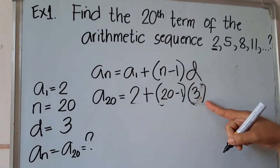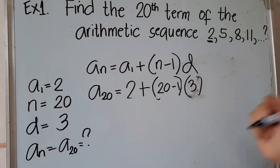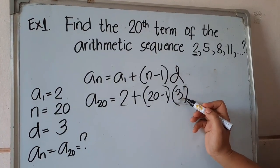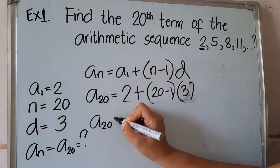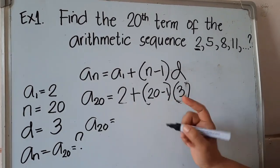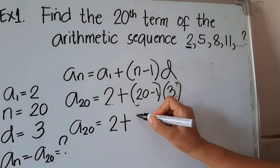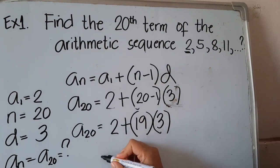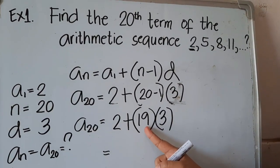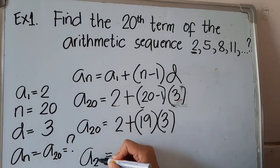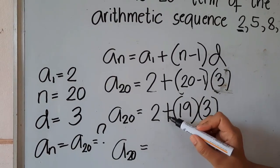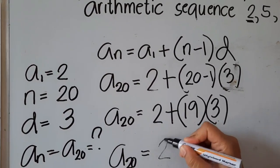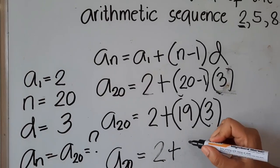Since we have to solve for a_20, we apply PEMDAS to simplify. We simplify inside the parenthesis first: 20 minus 1 gives 19. We cannot add 2 plus 19 yet — we have to multiply first. So: a_20 = 2 + 19 × 3, and 19 times 3 equals 57.